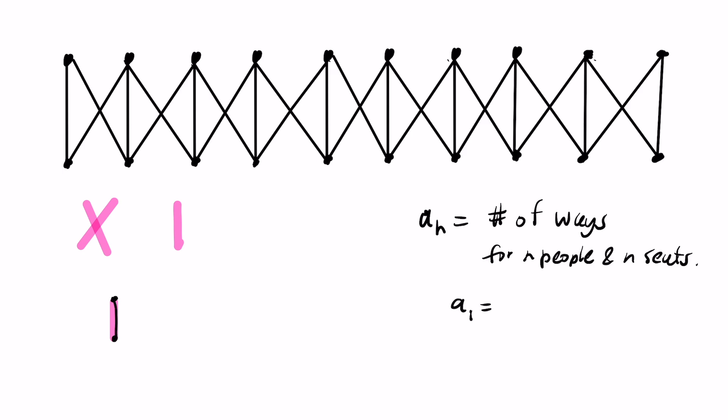And similarly, we only have two choices for a sub 2. If we add another person, we could match that person with the second seat. Or we could have done the matching this way. And so a sub 2 is 2 itself. Okay, so what is a sub n in general? So we can think about how we actually start our matching. Our matching starts either with one of these straight lines, or with an x.